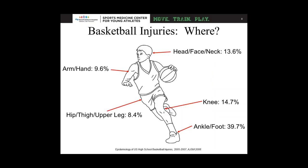Where do basketball injuries occur? They occur in the head, face, and neck about 13% of the time, and in the arm and hand about 10% of the time. The big ones are in the hip, knee, and ankle — and especially the knee and ankle, which we'll focus on today. Over 50% of basketball-related injuries happen in the knee and the ankle. That's our focus point, because we want to prevent those injuries from occurring.